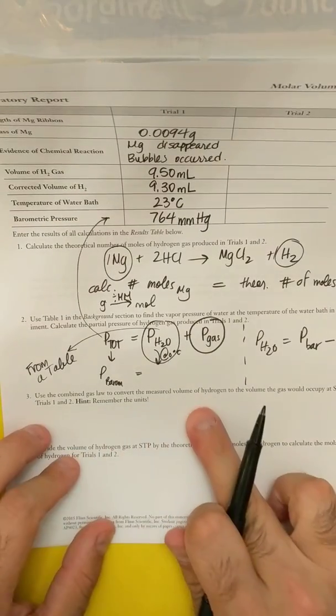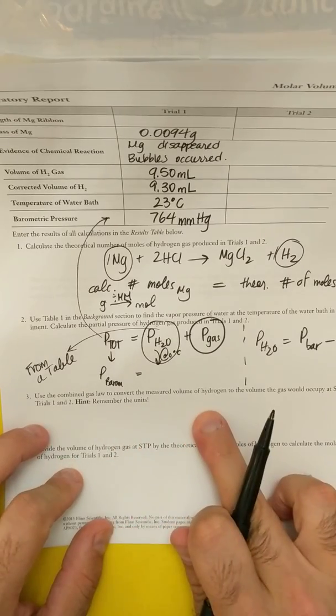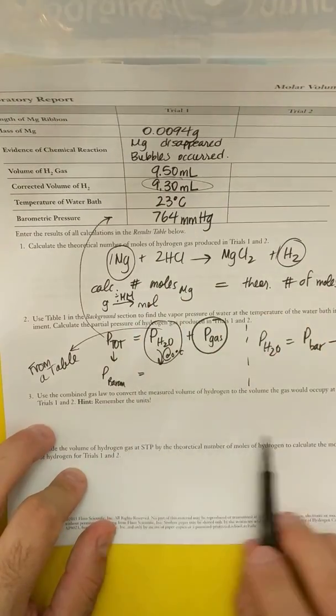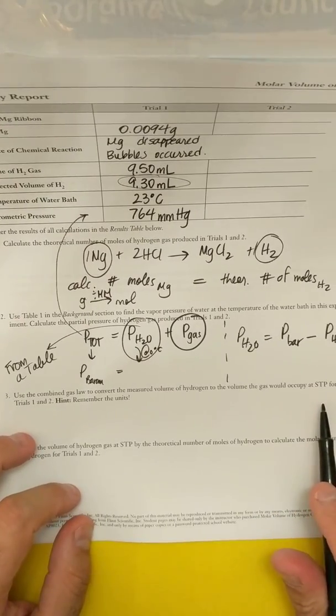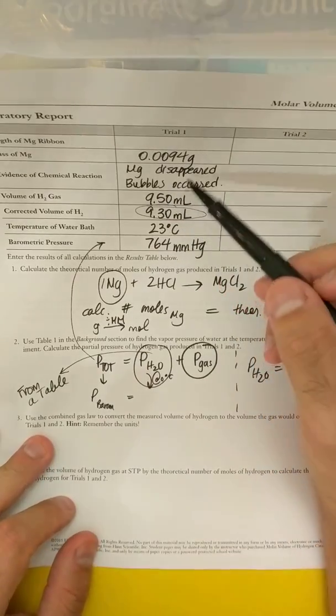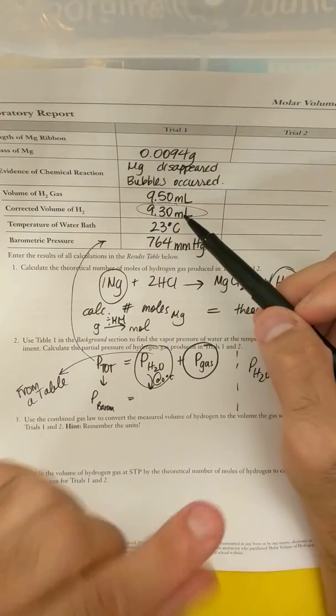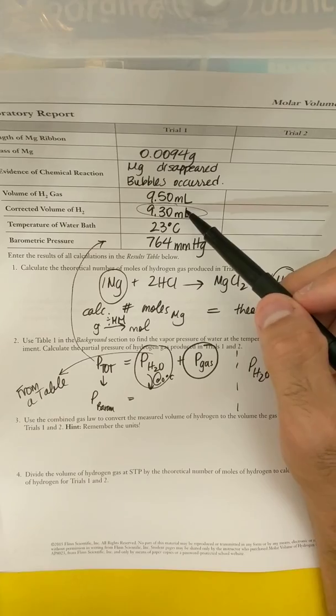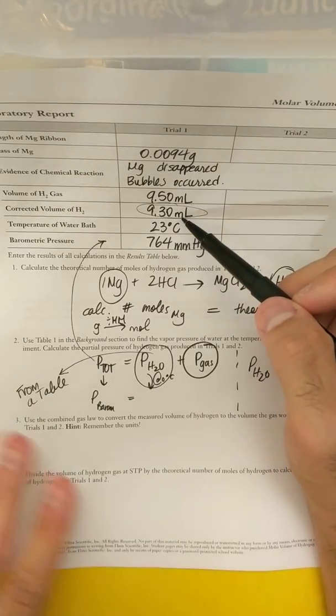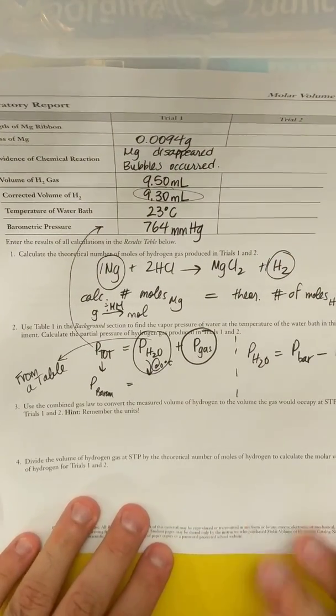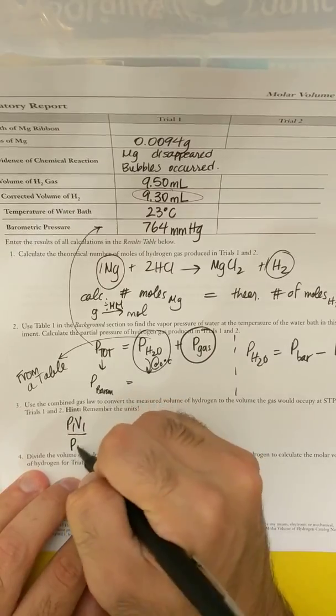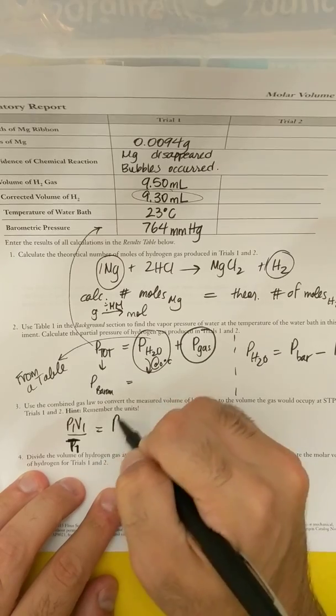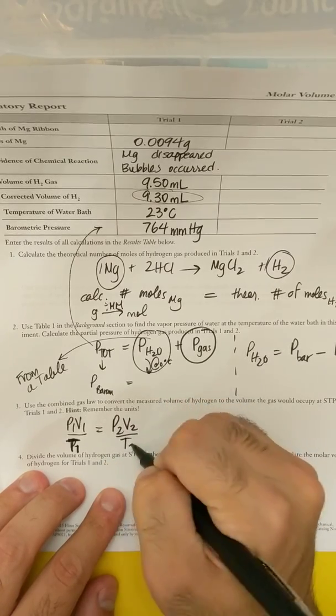Then it says use the combined gas law to convert the measured volume of hydrogen, which is our corrected one, to what the volume would occupy at STP. Now just to remind you, when I say corrected, you read the graduated cylinder upside down, so you had to subtract 0.2 from your volume. I did that for some of you if I gave you your data. Remember the equation for the combined gas law is P1 V1 over T1 equals P2 V2 over T2.